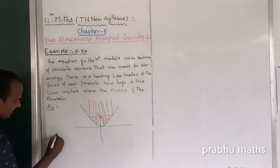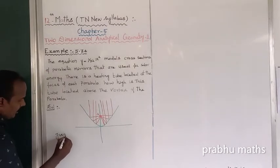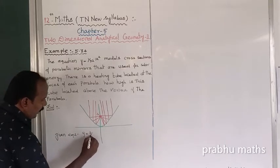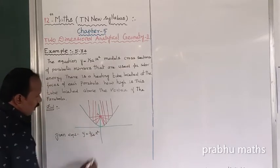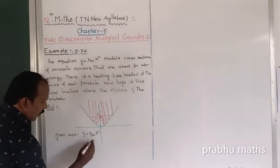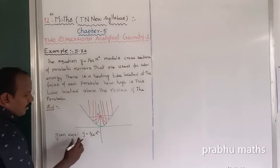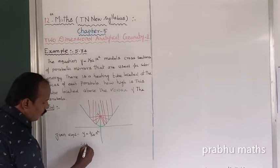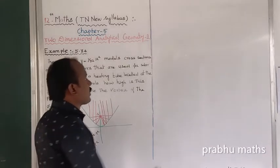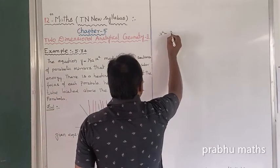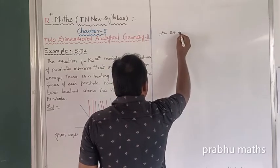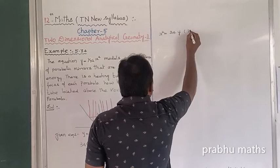Now the given equation is y is equal to 1 by 32 into x square. Bringing 32 to the left side: 32y is equal to x square, so x square is equal to 32y. This is an upward open parabola.